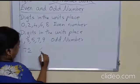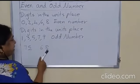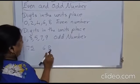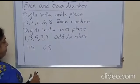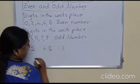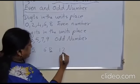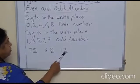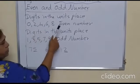Now take the number 68. You have to see the digit in the units place. Here in the units place you have 8, so it is an even number. Suppose the number is 12. Again, just see what is there in the units place — it is 2 — and 2 means it is an even number.